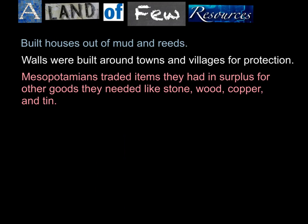They built houses out of mud and reeds. They bundled the reeds together to form pillars, inserted them into holes in the ground, bent the pillars over and bound them together to form a roof, then plastered the walls with mud to strengthen them. Walls were also built around towns and villages for protection. The Mesopotamians traded items they had in surplus for other goods they needed, like stone, wood, copper, and tin — because living in a desert area lacking some resources meant that trade was important. You would take what you had a surplus of and trade it for something you needed.